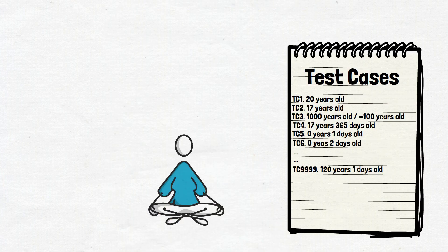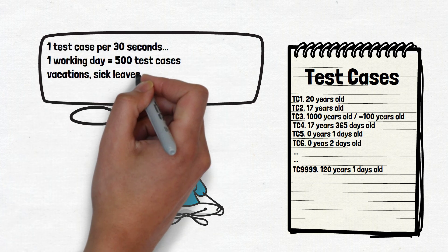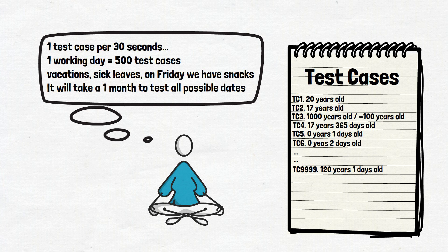If you go with a simple approach to test all possible dates, you'll need weeks to test this simple form. And if the manager asks you how much time it will take, you will answer that you need at least a week or month. They will find another tester. Nobody will give you this amount of time to test this simple feature. So what you should do instead?